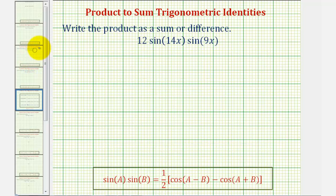So looking at our first example, notice how if x was positive, 14x would be greater than 9x. So we do have this in the preferred form where A would be equal to 14x and B would be equal to 9x.